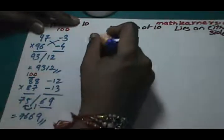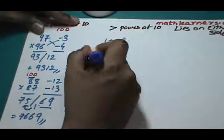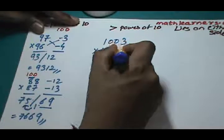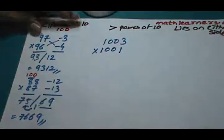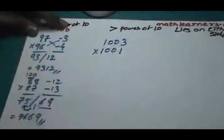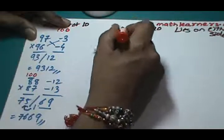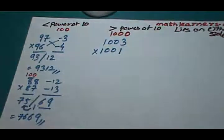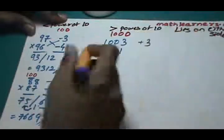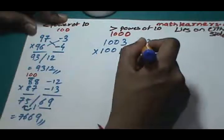Let's say we want to multiply 1003 by 1001. As both numbers are closer to 1000, base can be taken as 1000. As 1003 is 3 greater than 1000, that can be written as plus 3. As 1001 is 1 greater than 1000, that can be written as plus 1.